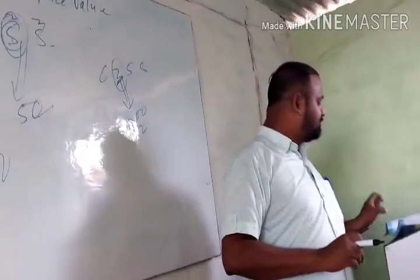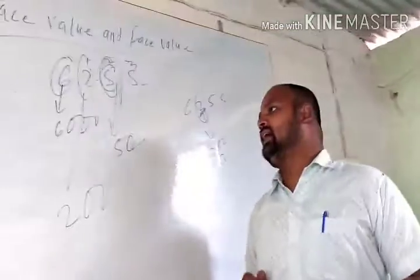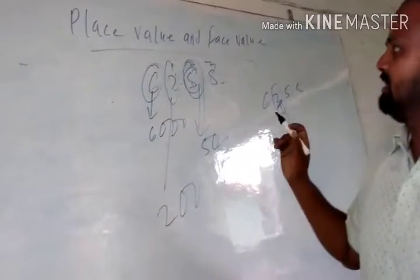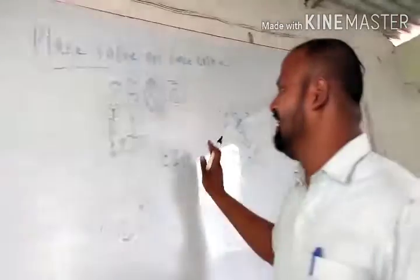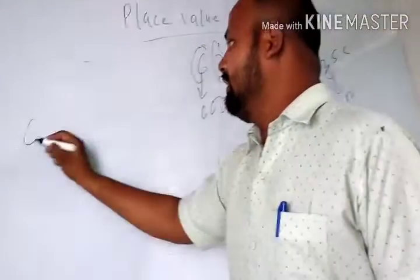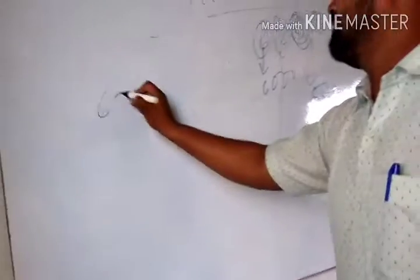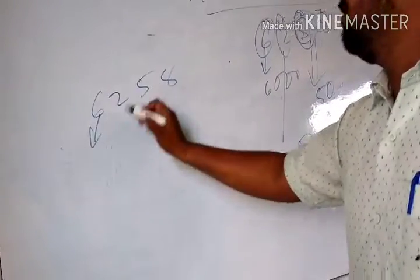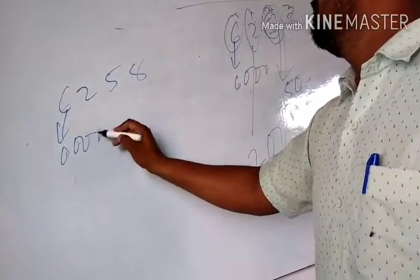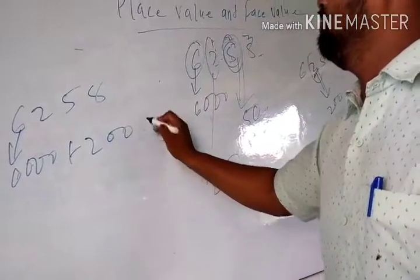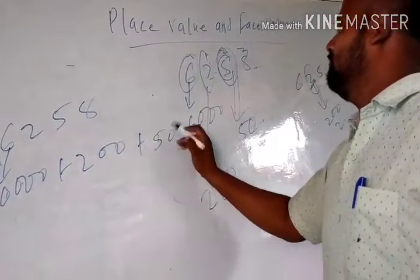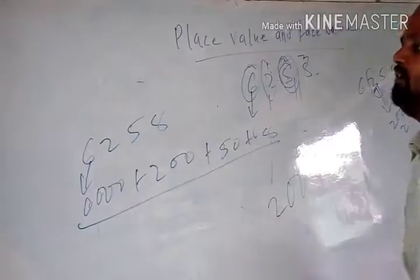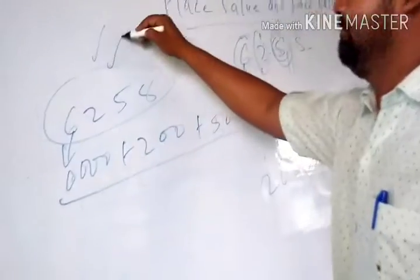और इसी तरह एक और topic है — expanded form। किसी number को expand कैसे करते हैं। जैसे कि 6258 को expanded form में लिखेंगे: 6000 plus 200 plus 50 plus 8। यह हमारा expanded form होगा।